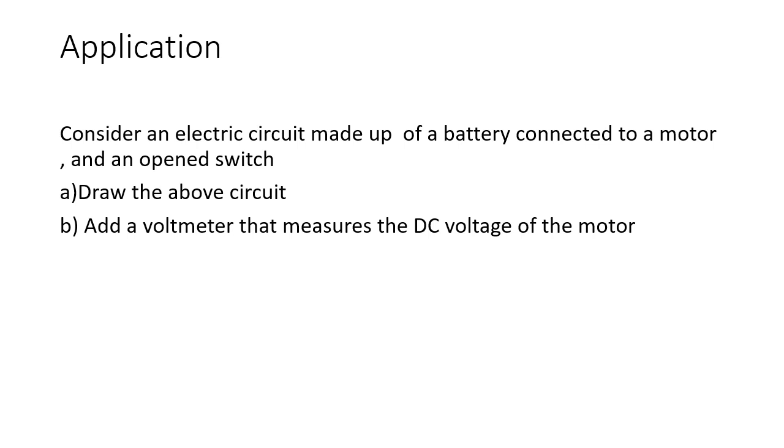As an application, consider an electric circuit made up of a battery connected to a motor and an opened switch. Draw the above circuit using the electric symbols we have just taken, and then add a voltmeter that measures the DC voltage of the motor. Don't forget to show the com-terminal of the voltmeter.